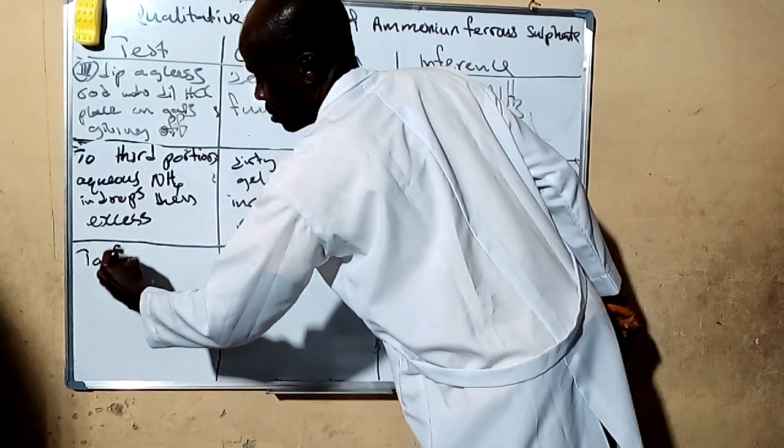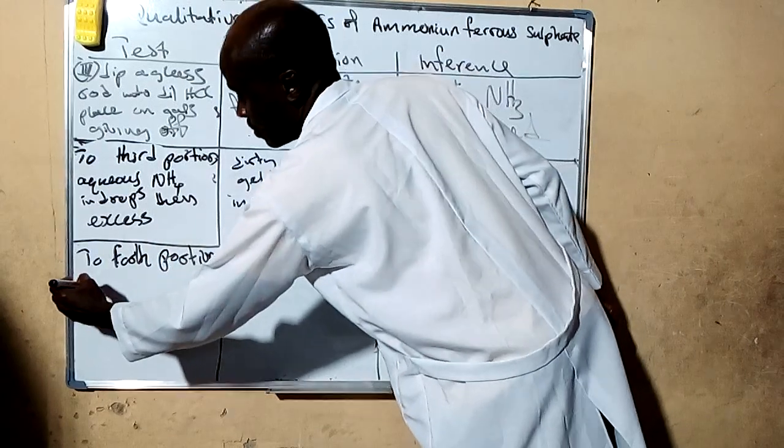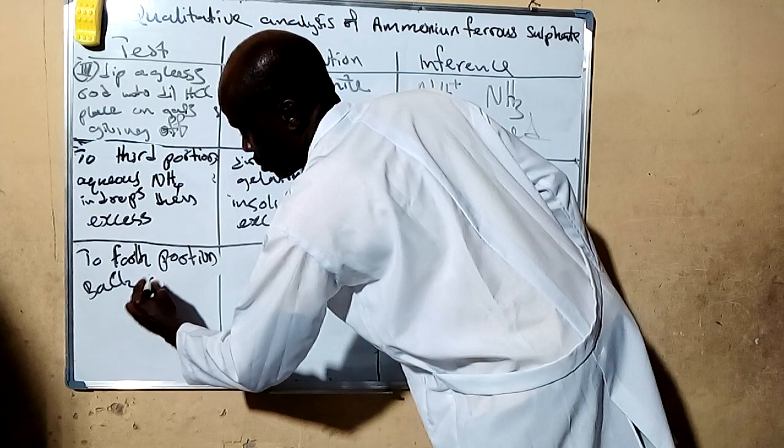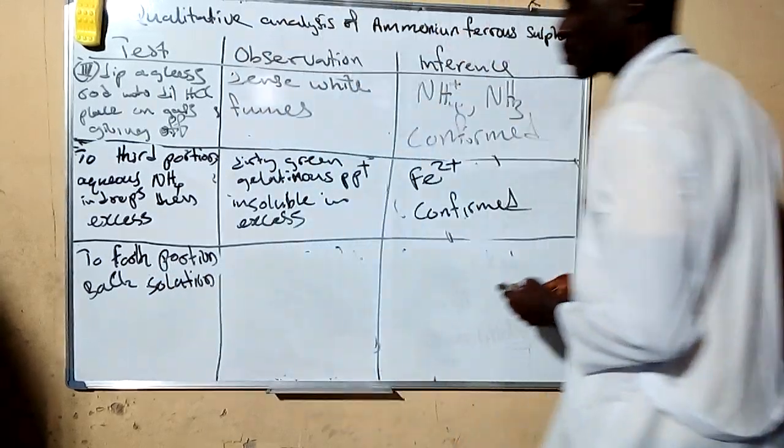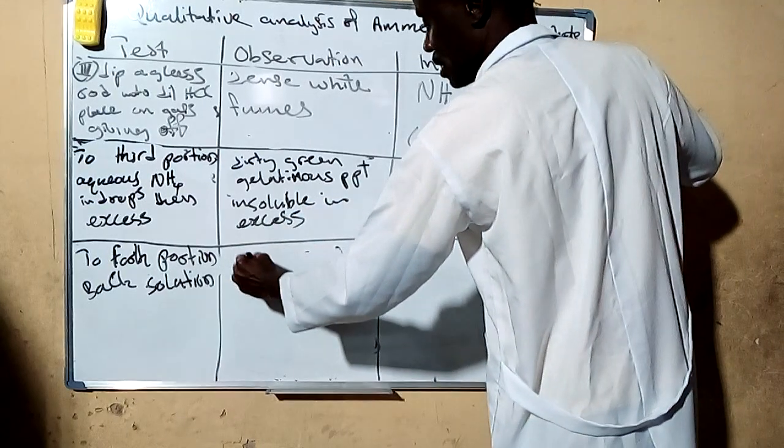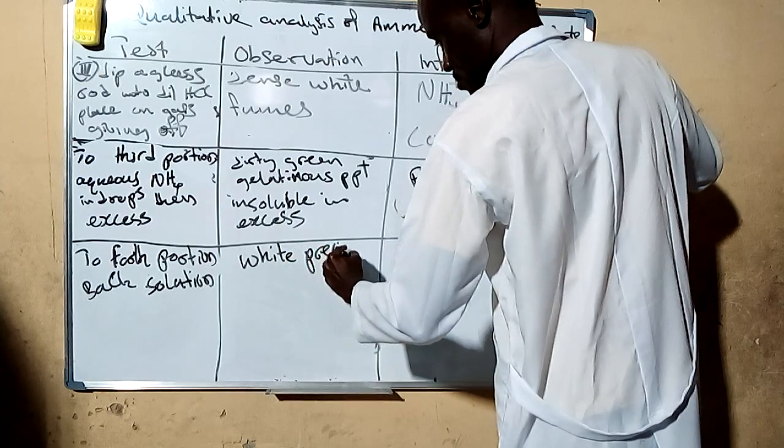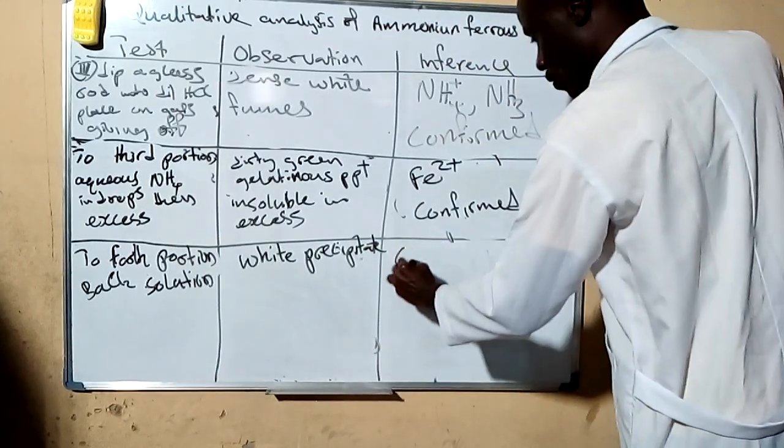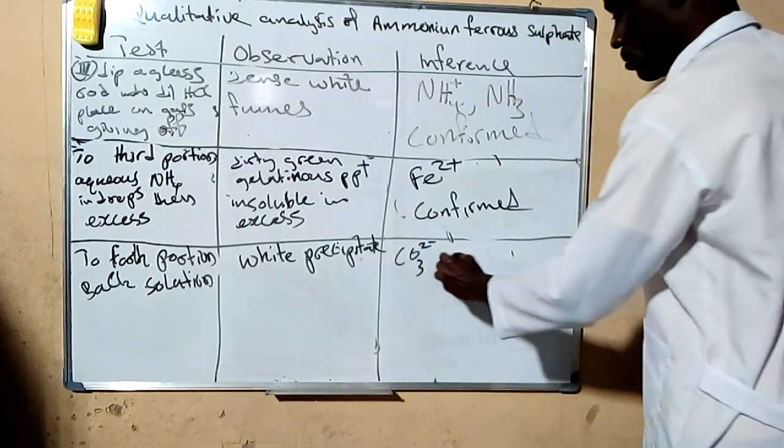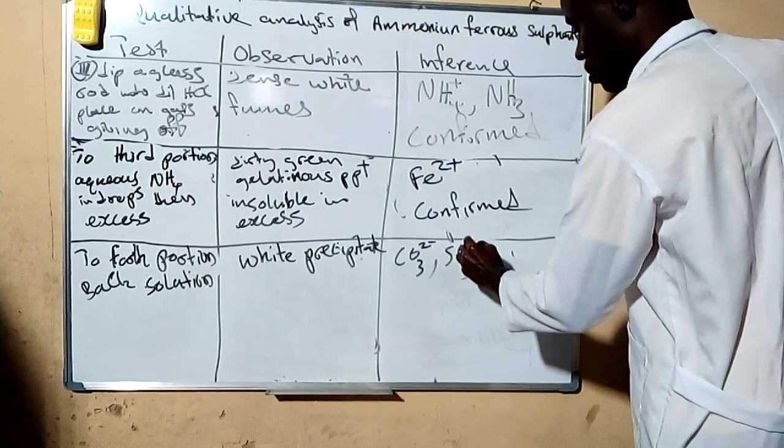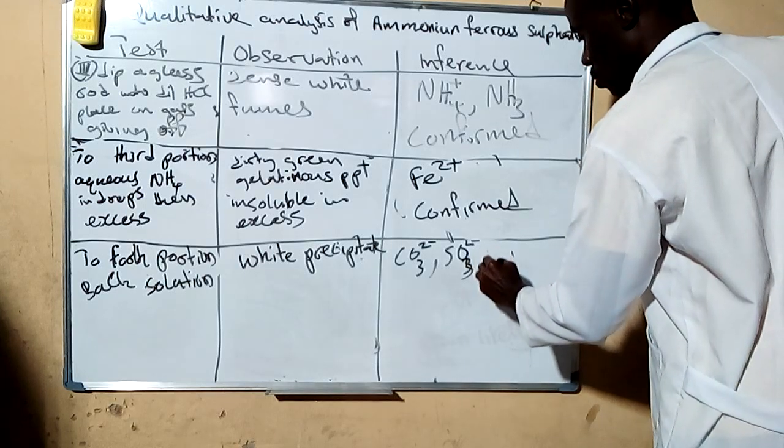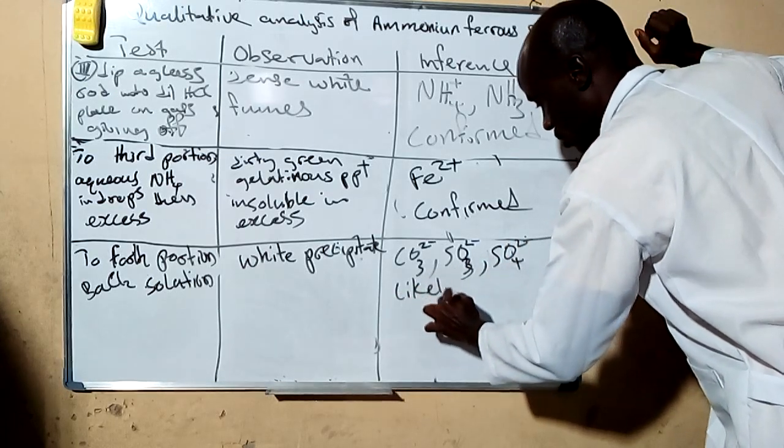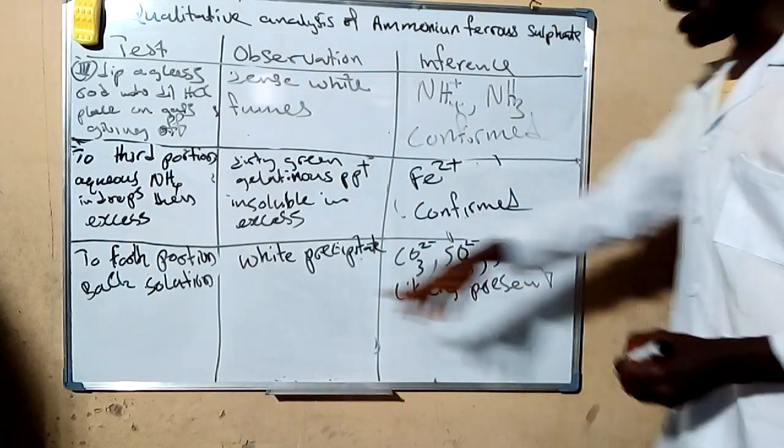The last test we have, to the fourth portion we add barium chloride solution. There what we observe is white precipitate. This white precipitate indicates the presence of carbonate ion, sulfate ion, and also acetate ion. All these ions are likely present.